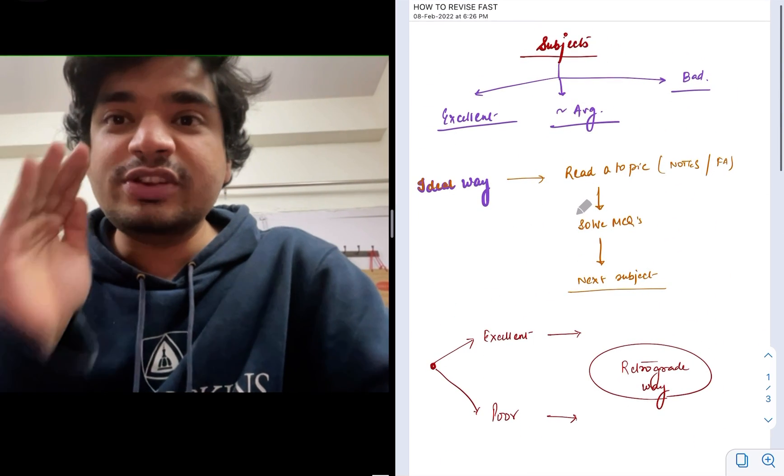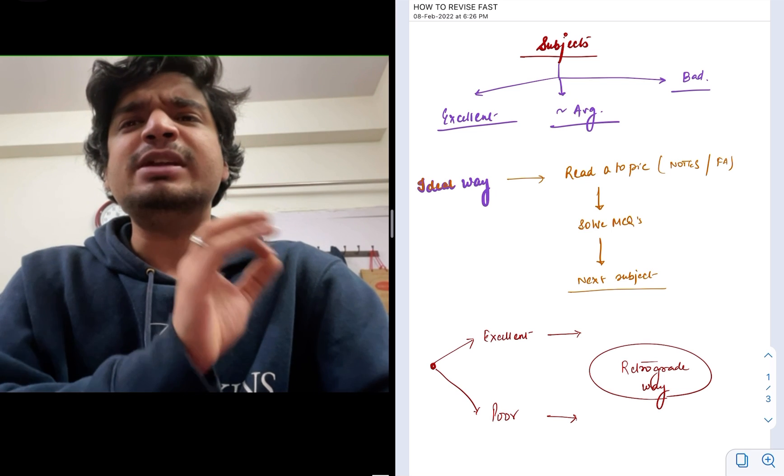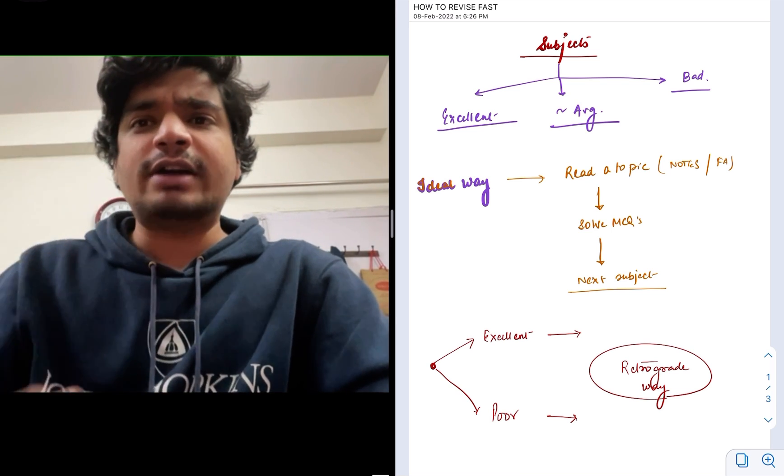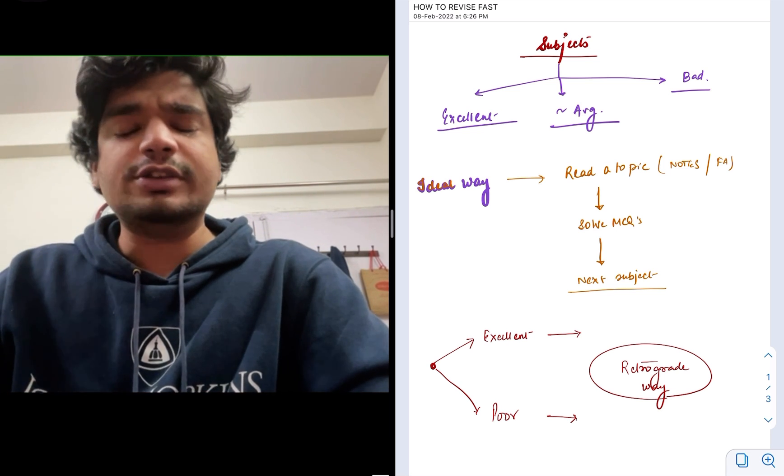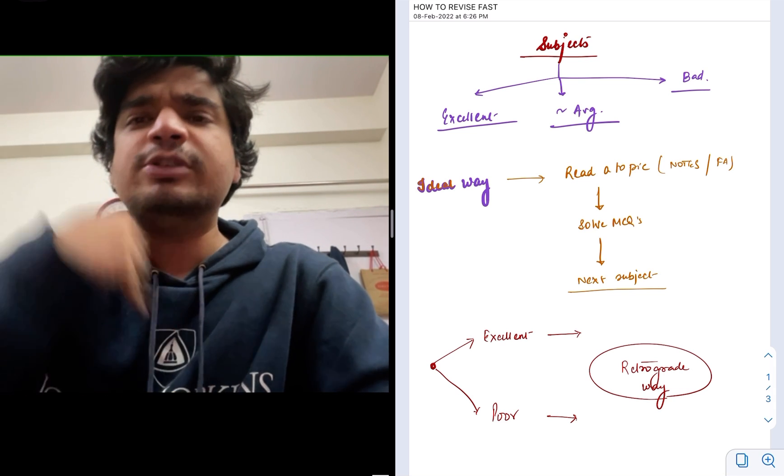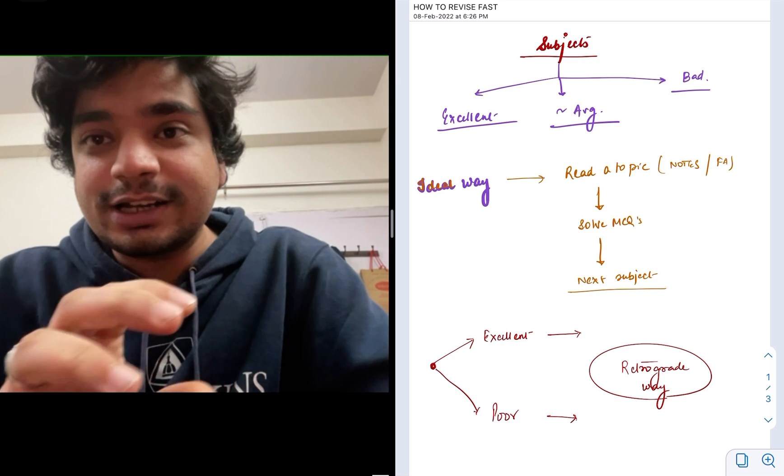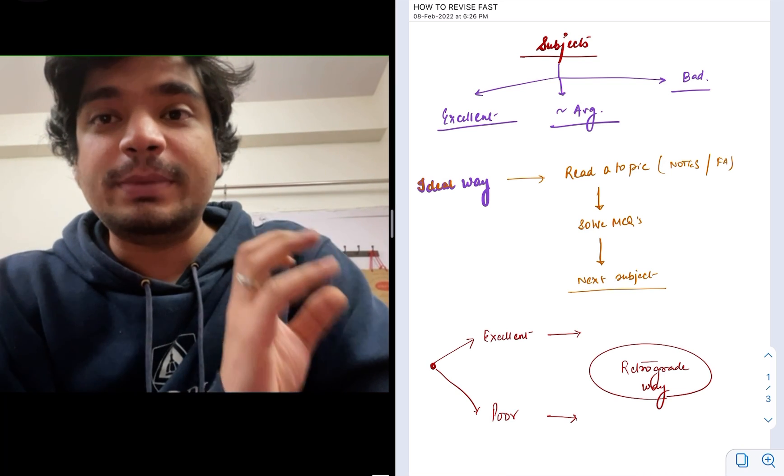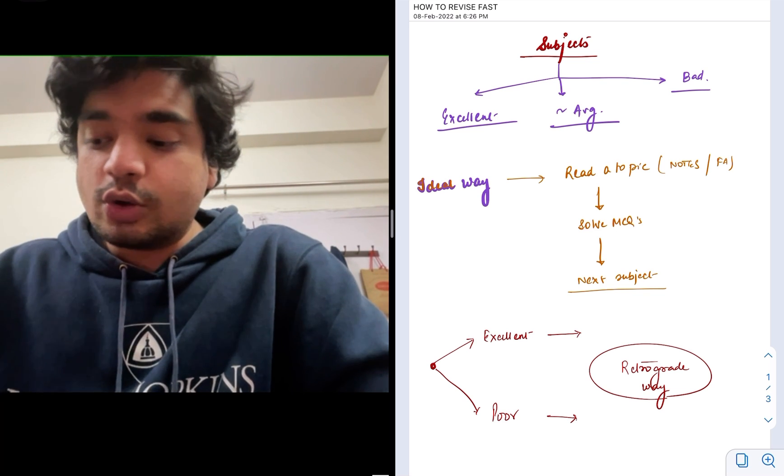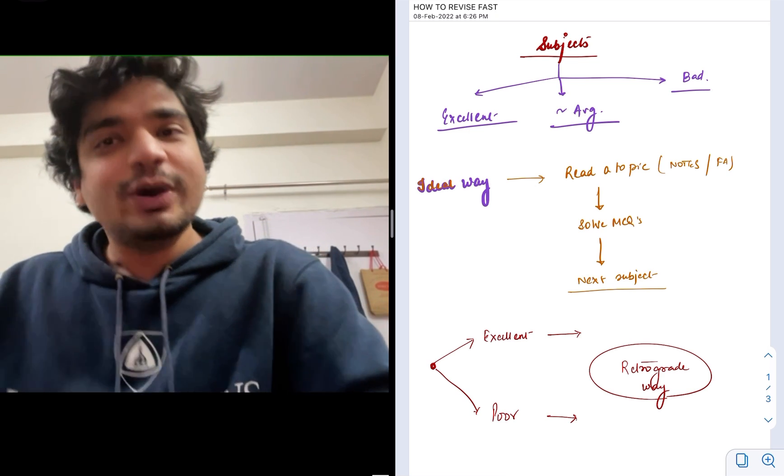So in order to revise fast, use this retrograde method of revision, especially for your excellent subjects where you'll get more than 95%, and the subjects which are bad, by making sure that you solve the MCQs and read that theory, will ensure you do not get below 50 to 60% in those MCQs. Hopefully this has made it clear and it will help in further revisions of your topic. So thank you and have a nice day.